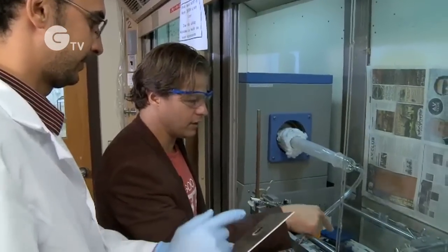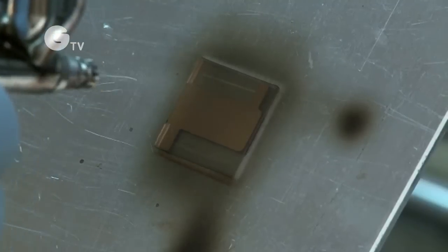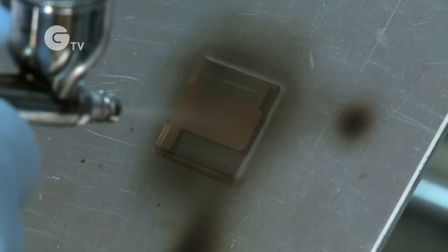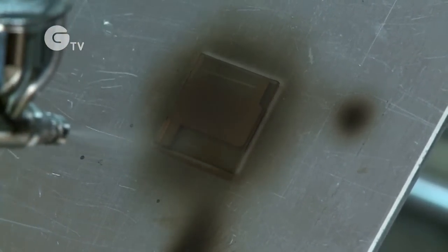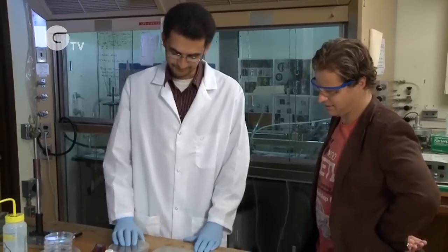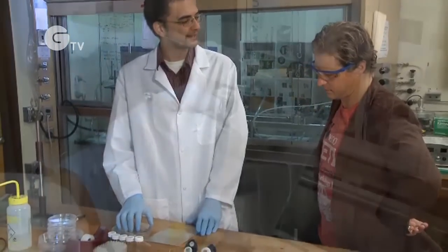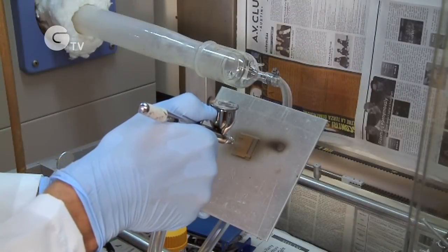This spray paint could be part of the future of solar power. With support from the National Science Foundation, chemical engineer Brian Korgel and his team at the University of Texas are developing spray-on solar cells.